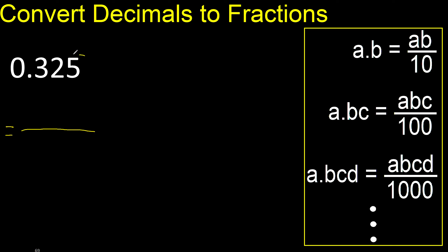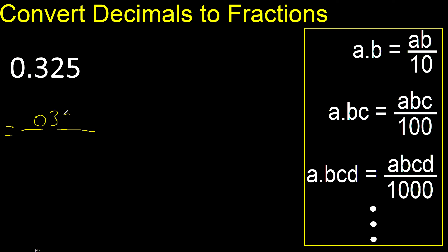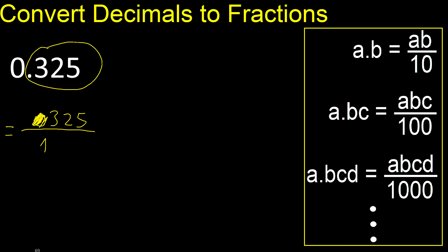First, all the numbers without the point. Eliminate the 0 here. Always number 1. After the point there are 3 numbers, therefore 3 zeros — 1, 2,